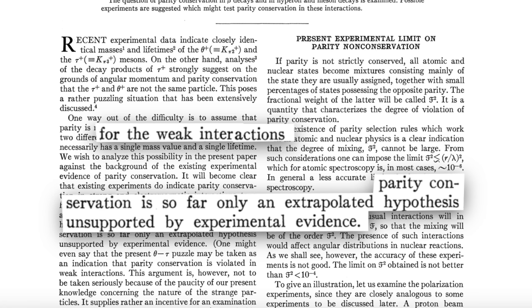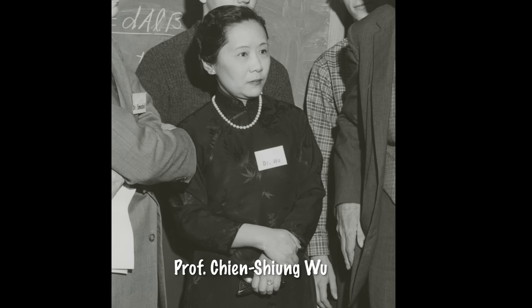So at Christmas break that year, physics professor Chien-Shiung Wu of Columbia University had planned to go on vacation with her husband, who was also a physicist. But instead, so intrigued by the possibility that the weak force might violate parity, she decided to stay behind and be the first person to test it.